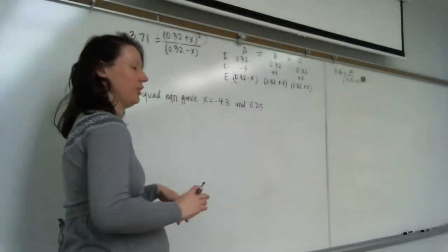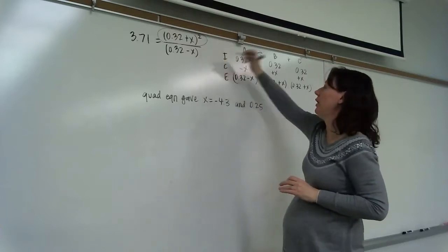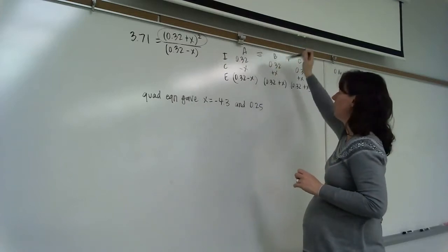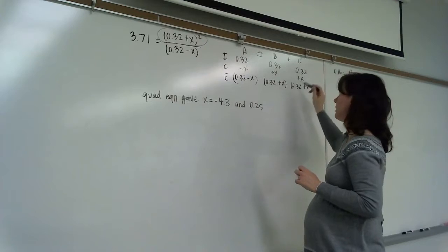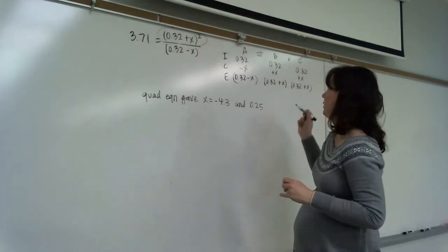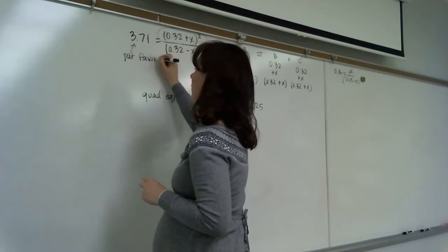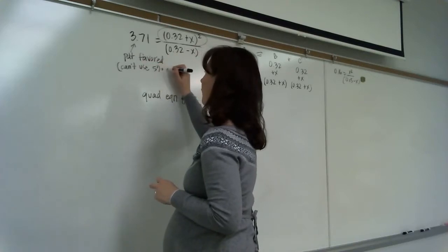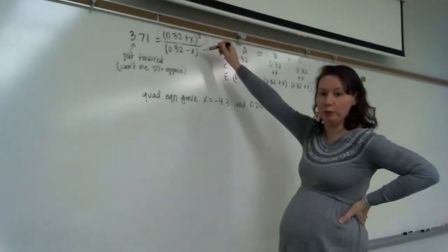While you were jotting that down I erased the board. Here's the ICE table that gave us that first problem. You have a reactant decomposing, beginning with 0.32 molar concentration. A decreases by x, B and C each increase by x. K is 3.71, which means this is product favored — so we cannot use the 5% approximation. That's only valid for reactant-favored reactions. That's why we had to go through the full quadratic, getting x = 0.25 and x = −4.3, and choosing x = 0.25.